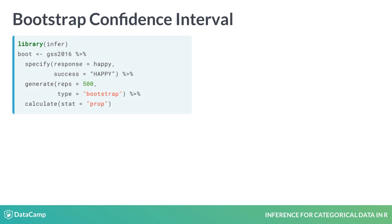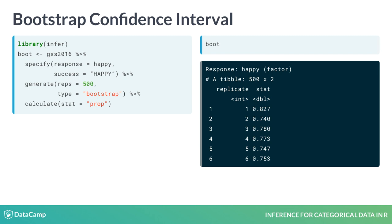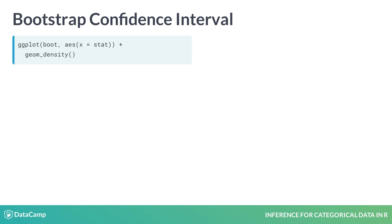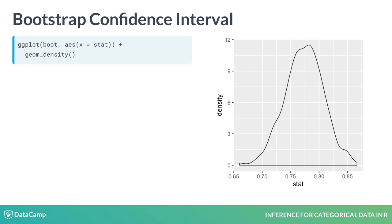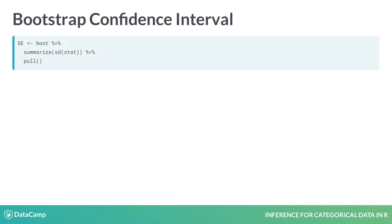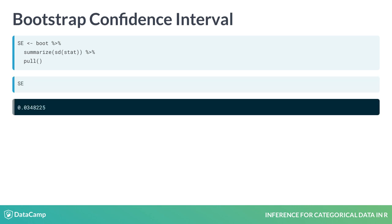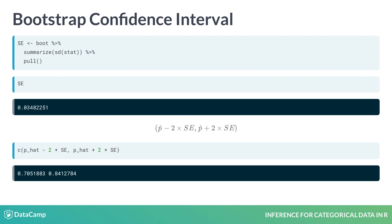To implement this, we start with our GSS data and then specify that we will focus on the happy column. Next, we will generate 500 replicate datasets through bootstrapping, and for each one, calculate the proportion that are happy. When we print this new object, we see we now have a dataframe that contains 500 p-hats. If we create a density plot of these statistics, we see that it's unimodal and symmetric and ranges from roughly 0.7 to 0.85. If we calculate the standard deviation of that stat variable, we see that it's about 0.034. With this standard error in hand, we can form our confidence interval by adding and subtracting twice that value from p-hat. We learn that we can be 95% confident that the proportion of all Americans that are happy is between 0.705 and 0.841.